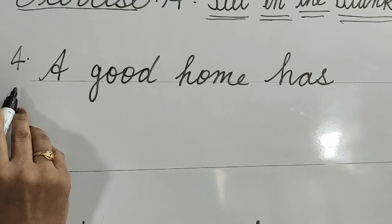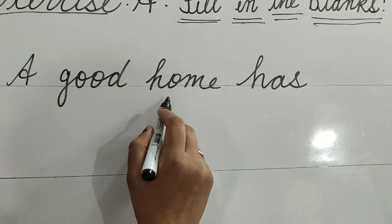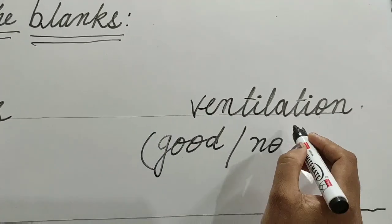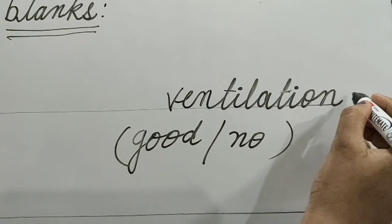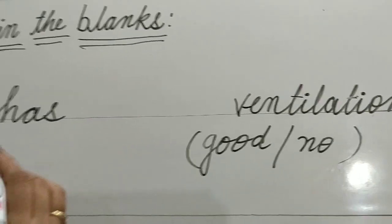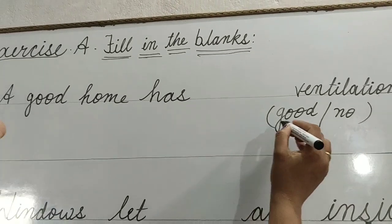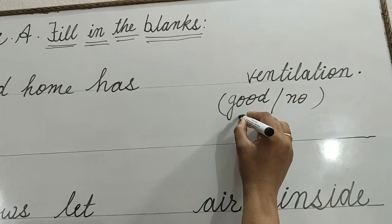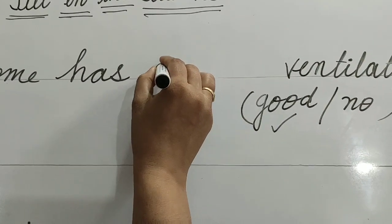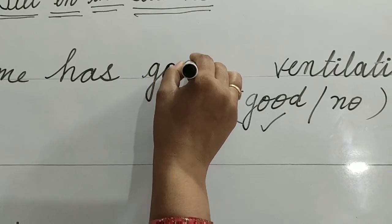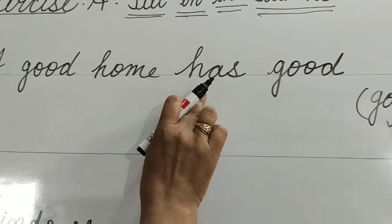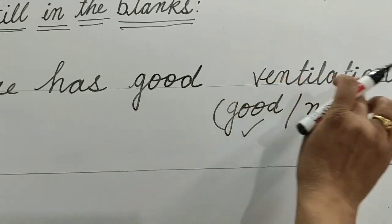Question 4: A good home has dash ventilation. The options are good or no. Good is the correct option. So tick here and write down: good. A good home has good ventilation.